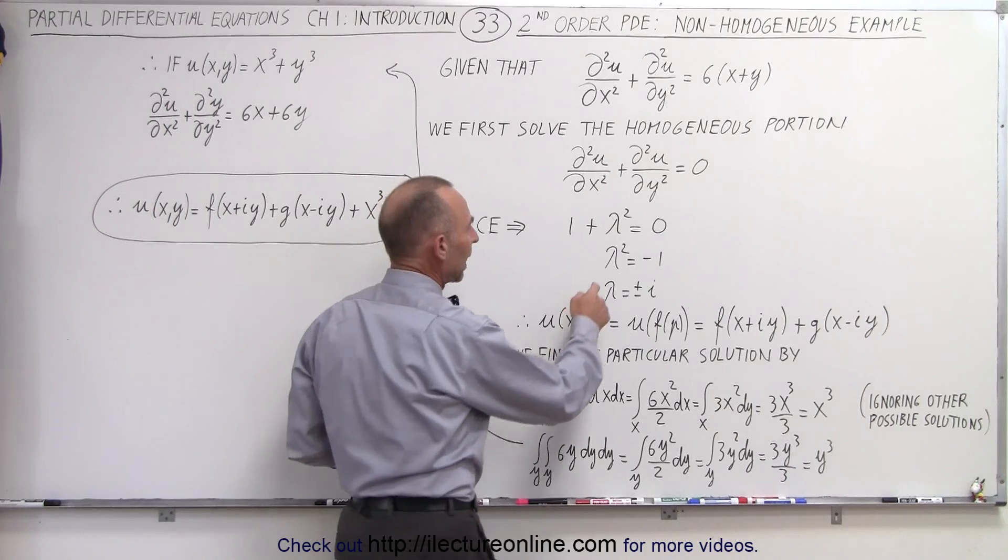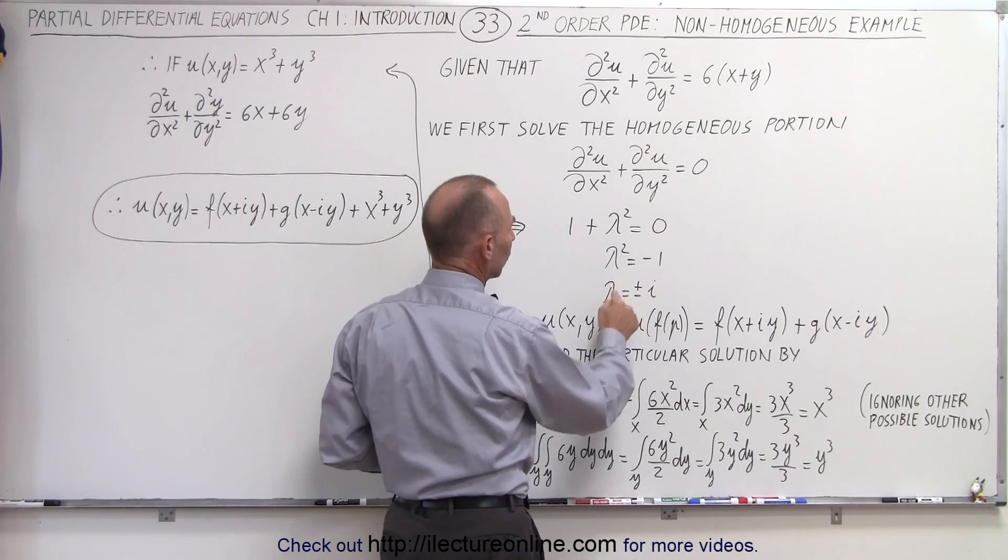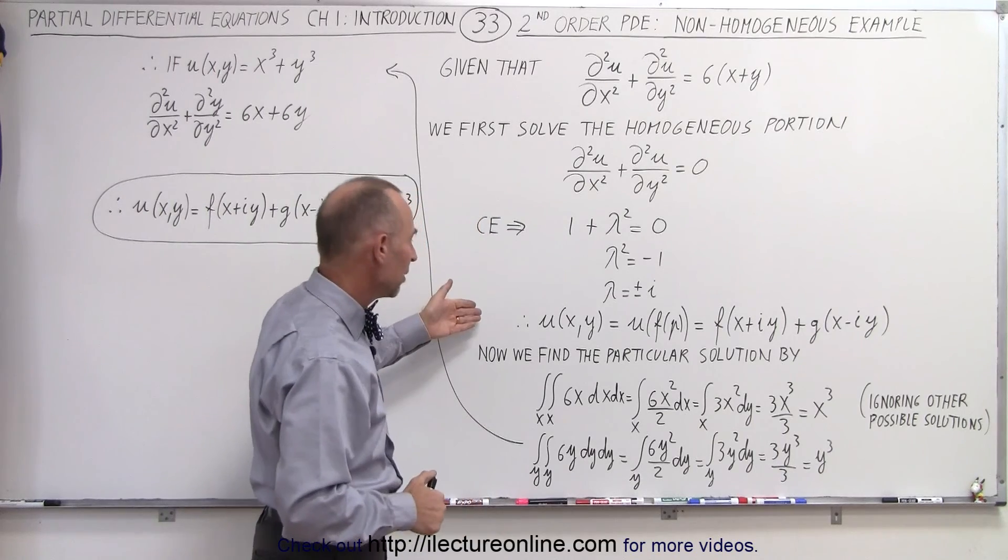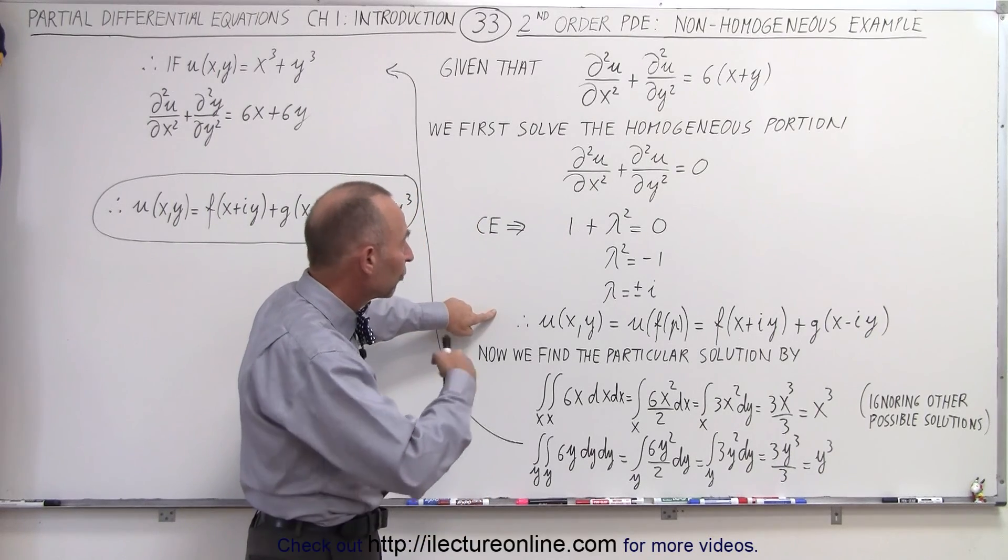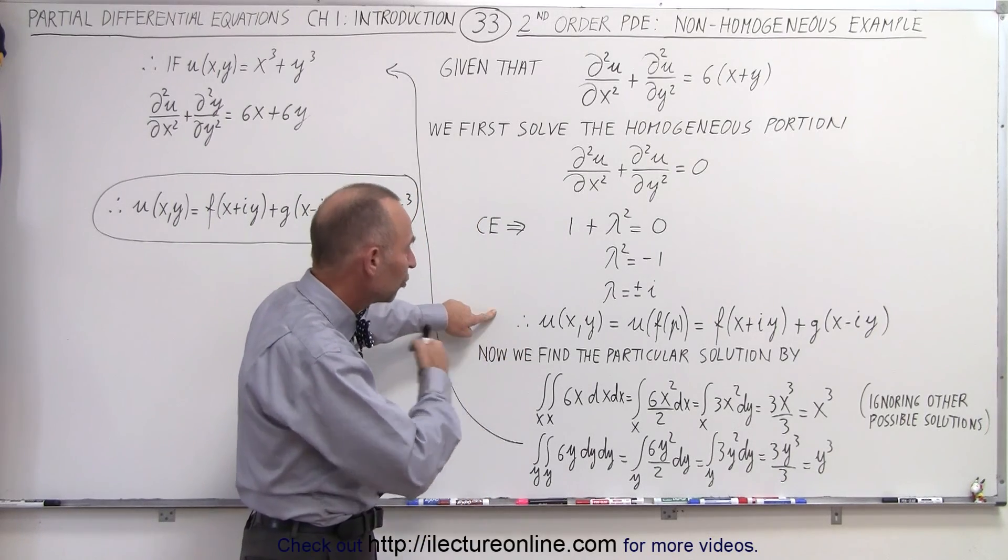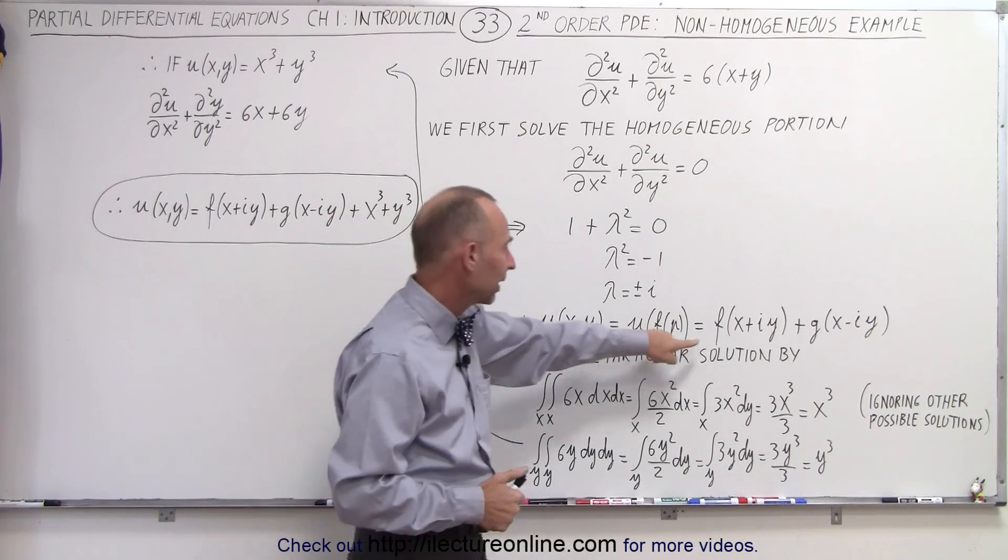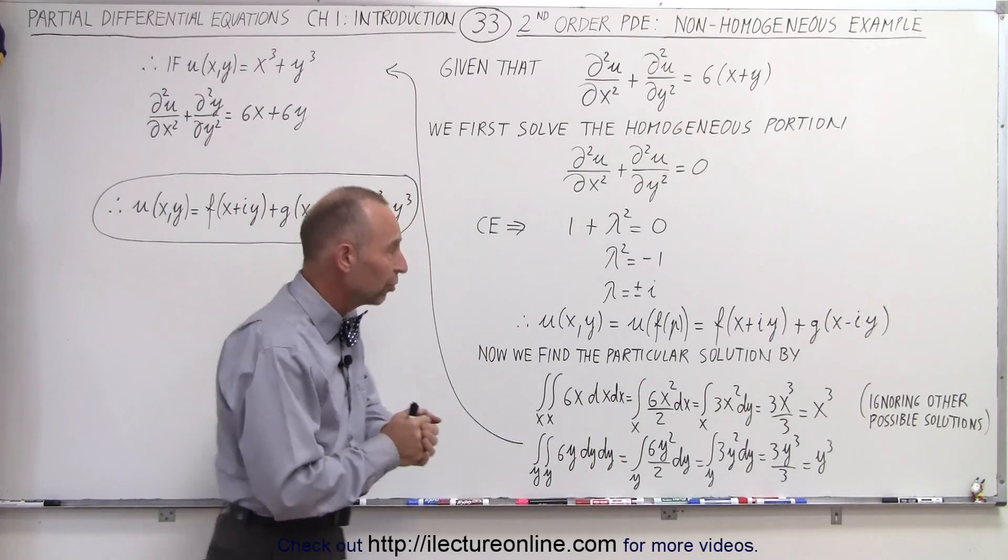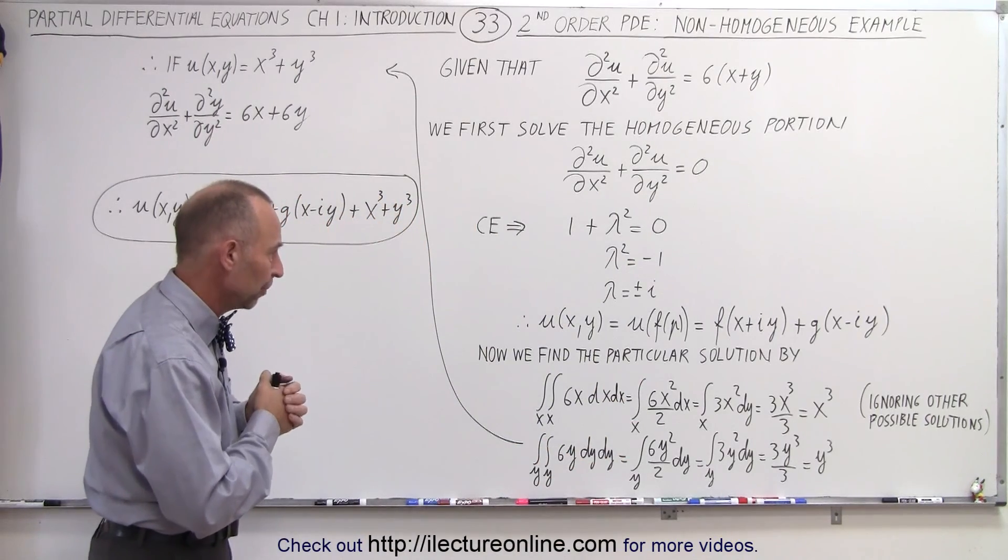Then solving for lambda squared, that's equal to negative 1, so lambda takes on the value of plus or minus i. So the homogeneous portion of the solution looks like a function of x plus iy plus a function of x minus iy. So we're now used to seeing that type of solution.